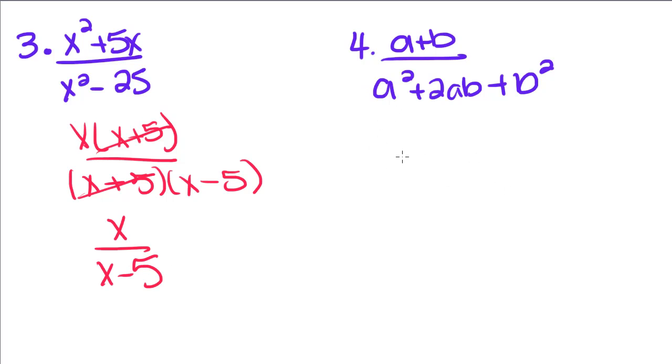And now, this last one, you can't factor the top, but the bottom should look really familiar, because this is a perfect square trinomial. If you remember, we're going to take the square root of the first plus the square root of the second, and then square root plus the square root, because that's our formula for a perfect square trinomial.